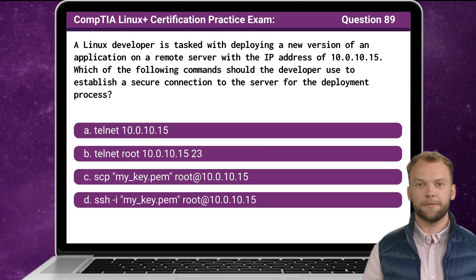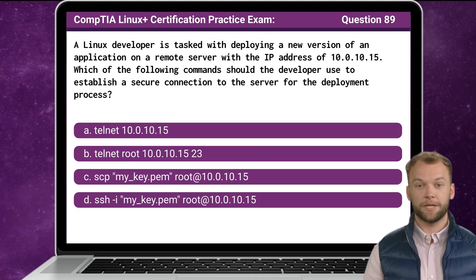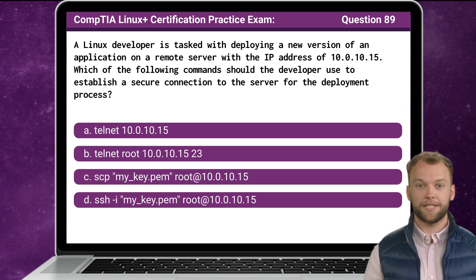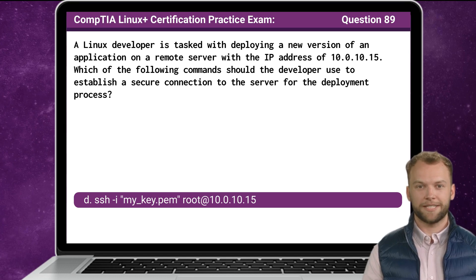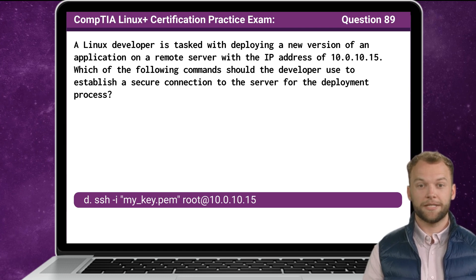Question 89. A Linux developer is tasked with deploying a new version of an application on a remote server with the IP address of 10.0.10.15. Which of the following commands should the developer use to establish a secure connection to the server for the deployment process? The answer is D: ssh -i my_key.pem root@10.0.10.15.